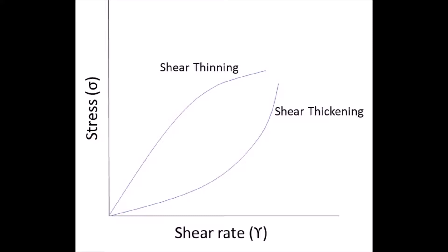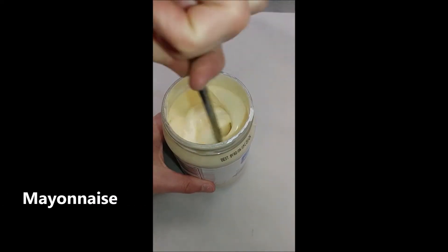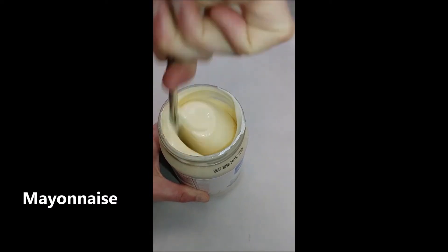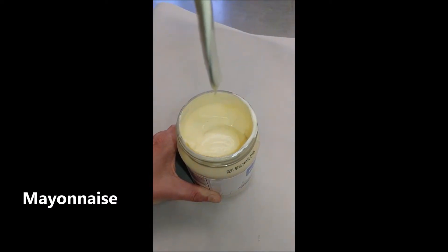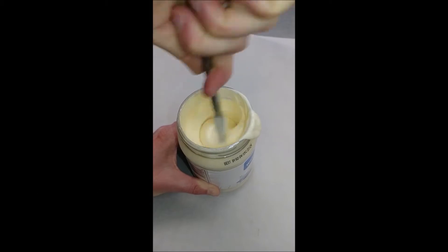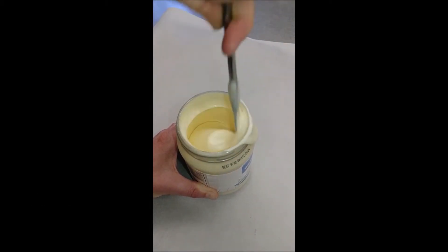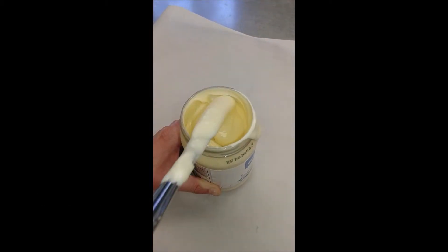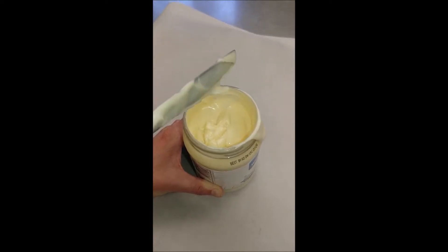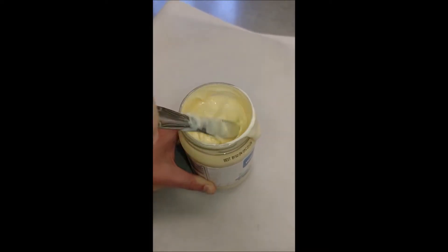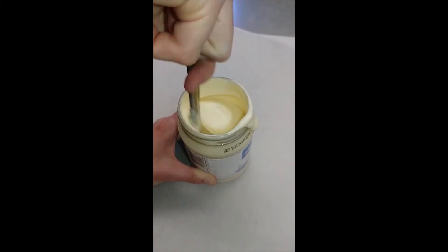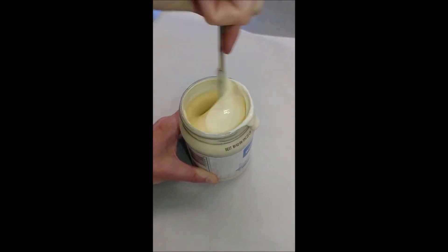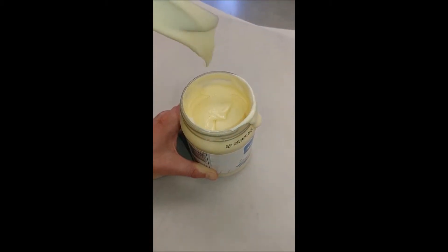Shear thinning and shear thickening fluids follow what is called power law dynamics. Shear thinning, as the name points out, thins as you apply more force and shear to that fluid. Thinning occurs when you stir a cake batter or mayonnaise. The more you stir them, the easier it becomes to stir further.